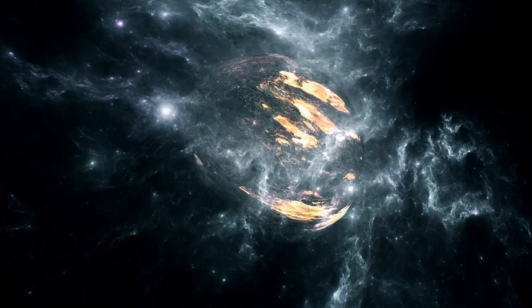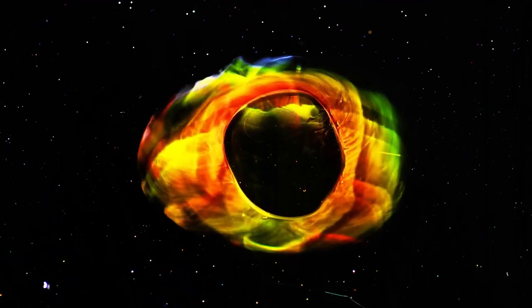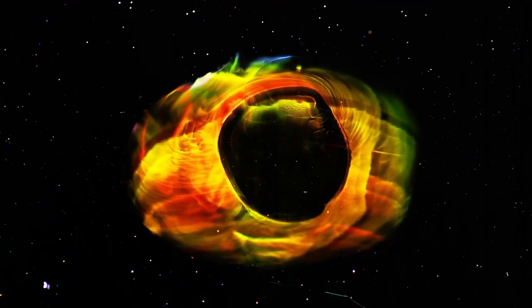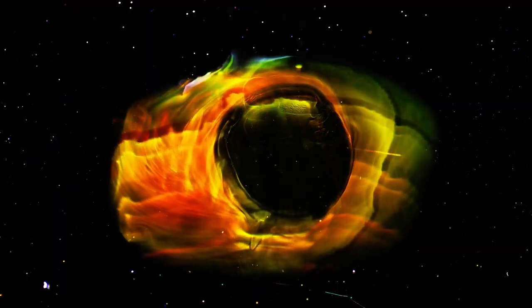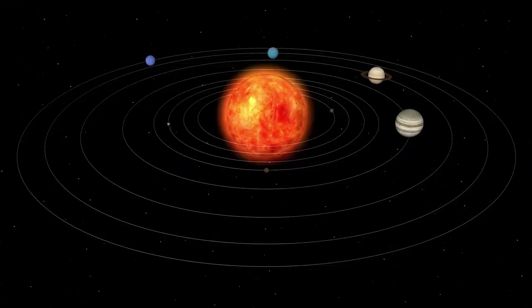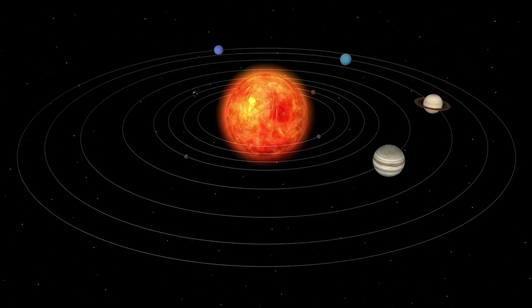Unlike our Sun, which will fade gently over billions of years, red supergiants like Betelgeuse live fast and die young. It's well into its final stages of life. But the question has always been when will it explode?